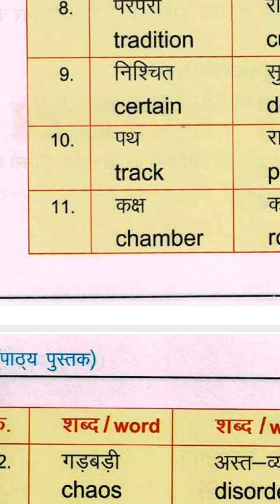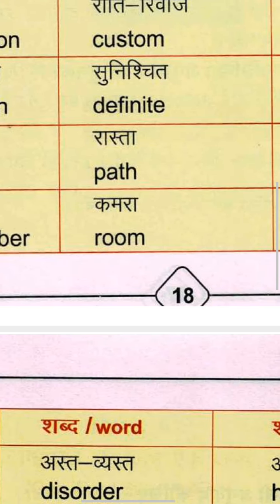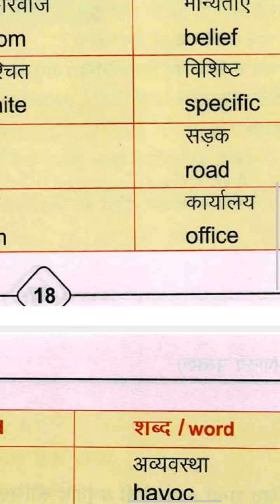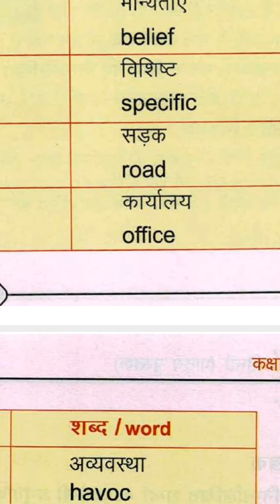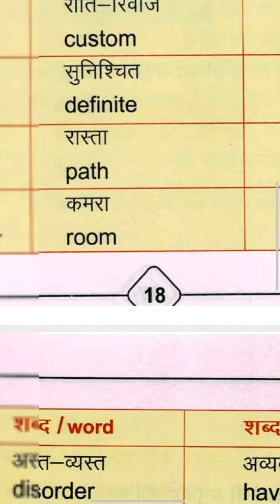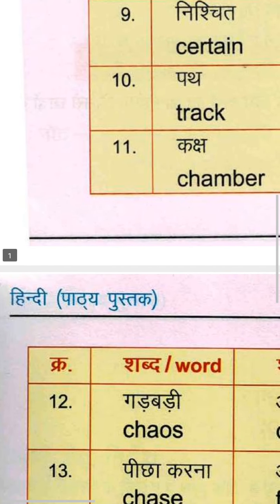Ninth group: Nishchit means Certain — C-E-R-T-A-I-N. Also Definite — D-E-F-I-N-I-T-E, meaning Sunishchit. And Vishisht means Specific — S-P-E-C-I-F-I-C.